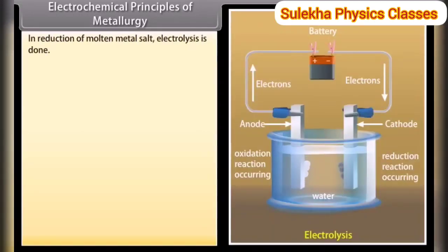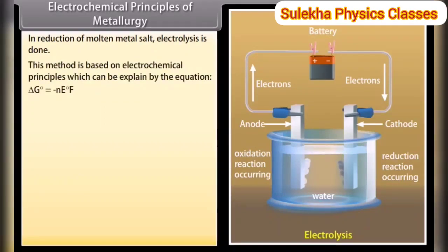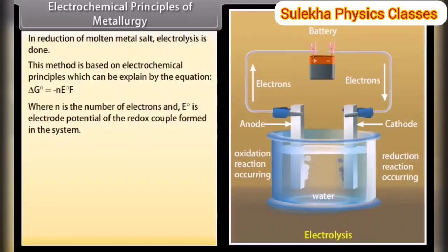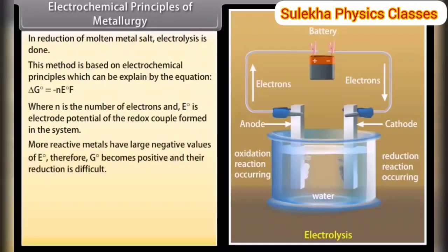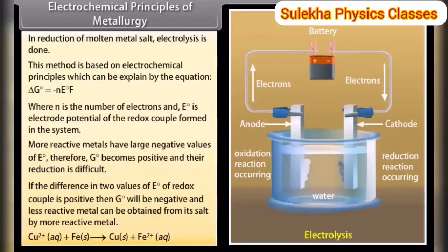Electrochemical principles of metallurgy. In the reduction of molten metal salts, electrolysis is done. This method is based on electrochemical principles explained by the equation: ΔG⁰ = −nE⁰F, where n is the number of electrons and E⁰ is the electrode potential of the redox couple. More reactive metals have large negative values of E⁰, so ΔG⁰ becomes positive and their reduction is difficult. If the difference in two E⁰ values is positive, then ΔG⁰ will be negative and a less reactive metal can be obtained from its salt by a more reactive metal.